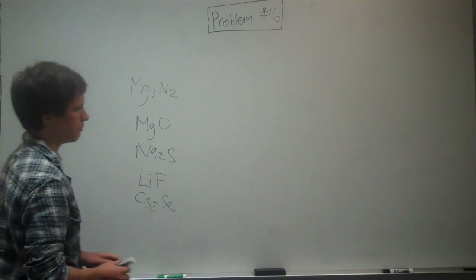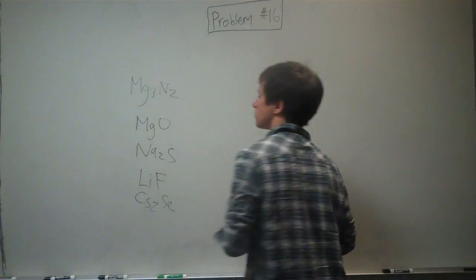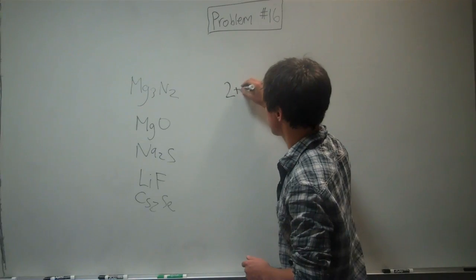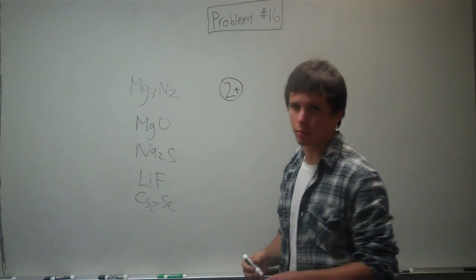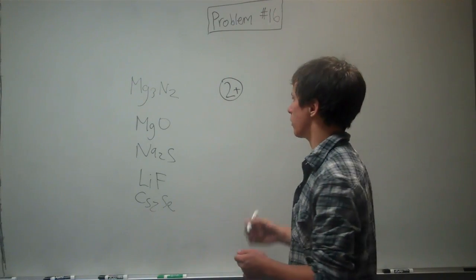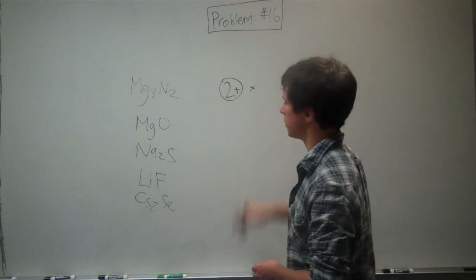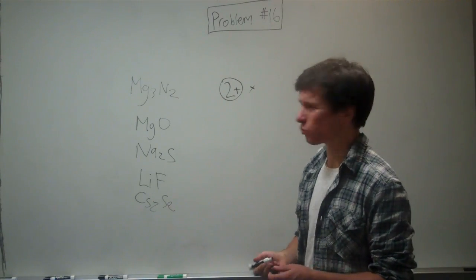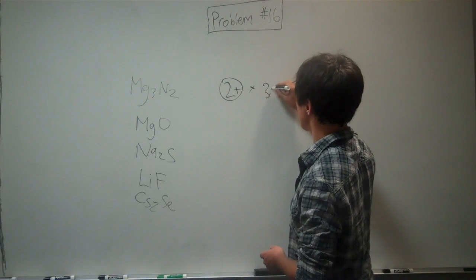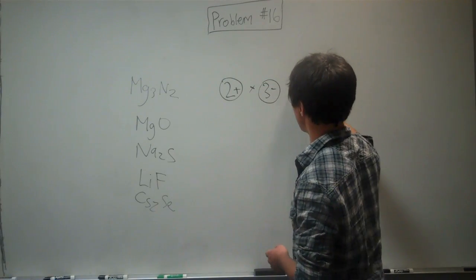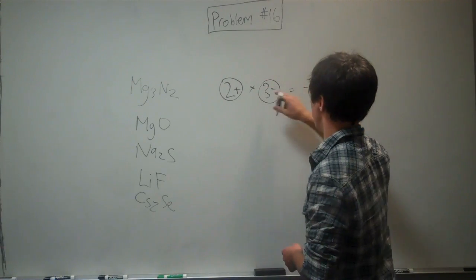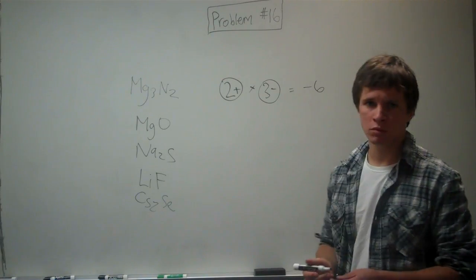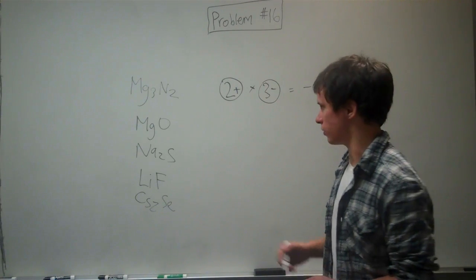So, what's the charge on magnesium? It's 2+, because it's in that second row of the periodic table. Times the charge on nitrogen, it's 3-, 2 times 3, make it negative because there's one negative, is negative 6. And that's basically what we're going to do for the rest of them.